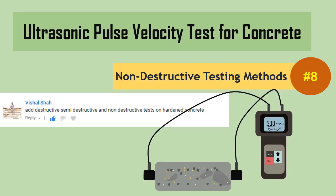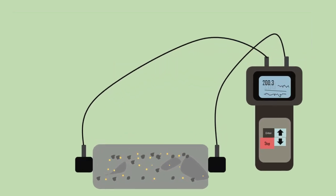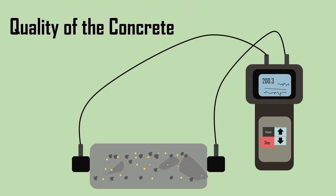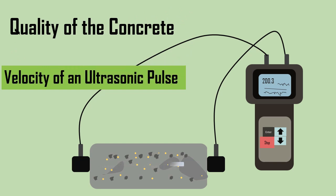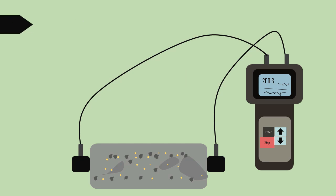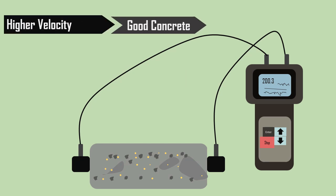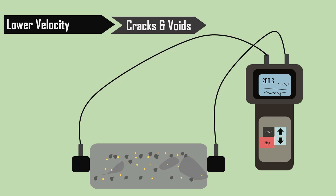Ultrasonic Pulse Velocity Test for Concrete. An ultrasonic pulse velocity test is generally done to check the quality of the concrete by determining the velocity of an ultrasonic pulse passing through a concrete structure. Higher velocities indicate the concrete is in good quality and lower velocities indicate the presence of cracks or voids.